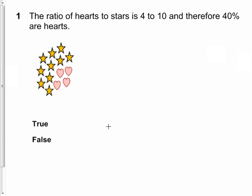Question 1 says the ratio of hearts to stars is 4 to 10. As we can see here, there are 4 hearts and 10 stars. So that part is true. The ratio of hearts to stars is 4 to 10, and therefore 40% are hearts.